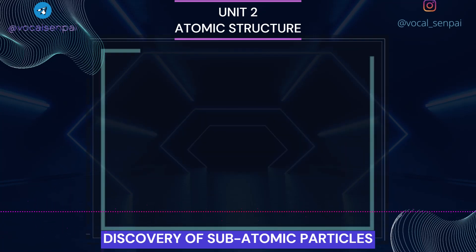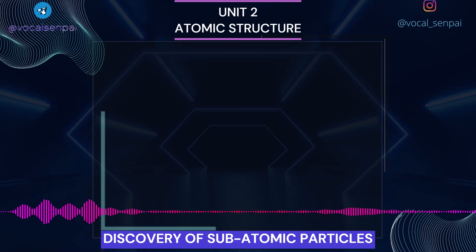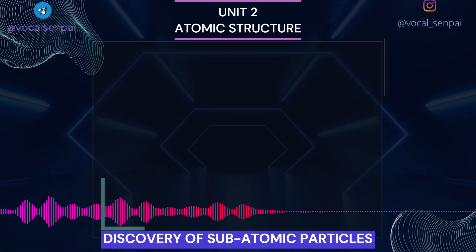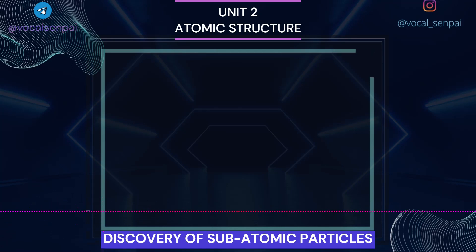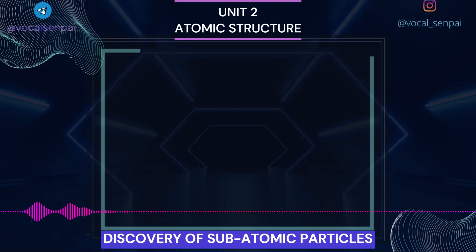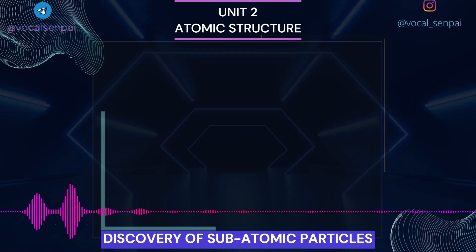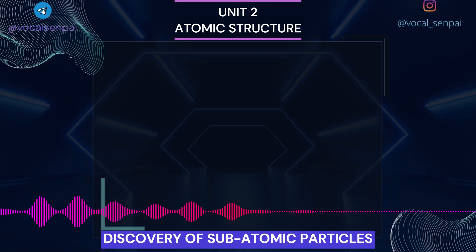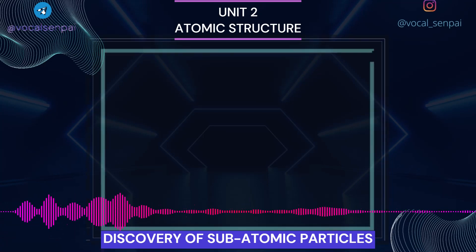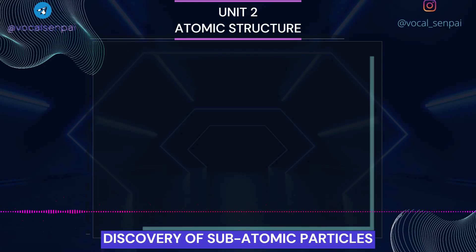Discovery of Protons and Neutrons: Electrical discharge carried out in the modified cathode ray tube led to the discovery of canal rays carrying positively charged particles. The characteristics of these positively charged particles are: (i) unlike cathode rays, mass of positively charged particles depends upon the nature of gas present in the cathode ray tube — these are simply the positively charged gaseous ions; (ii) the charge to mass ratio of the particles depends on the gas from which these originate; (iii) some of the positively charged particles carry a multiple of the fundamental unit of electrical charge; (iv) the behavior of these particles in the magnetic or electrical field is opposite to that observed for electrons or cathode rays.